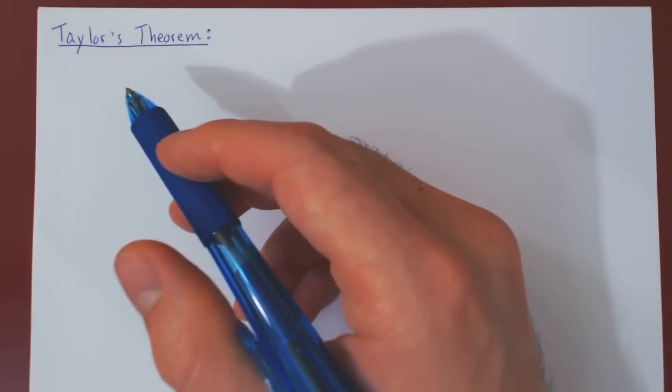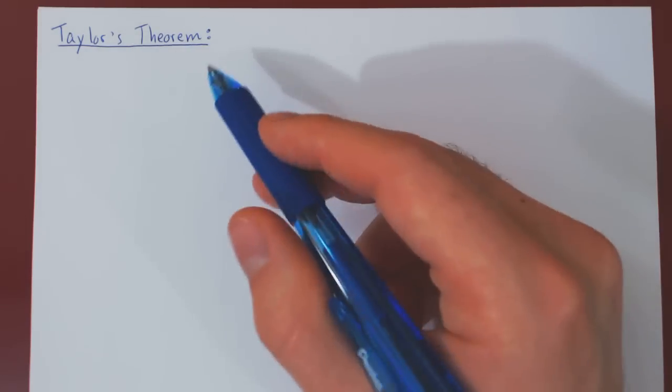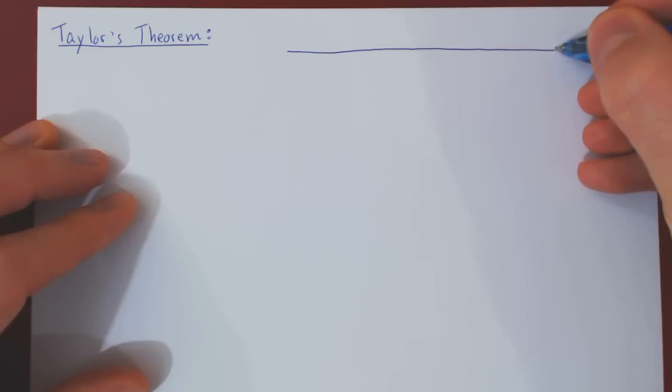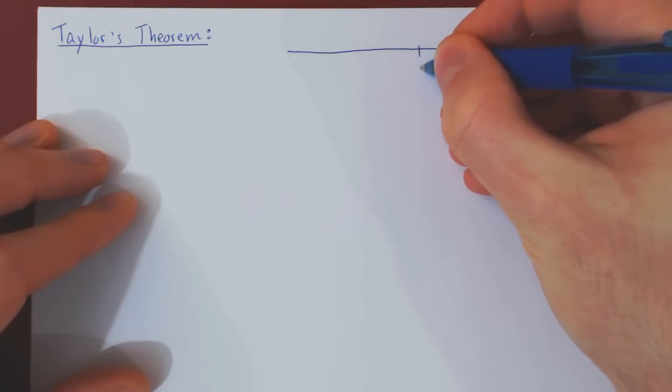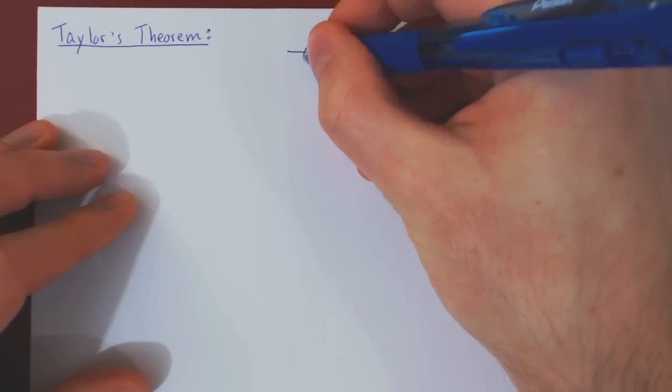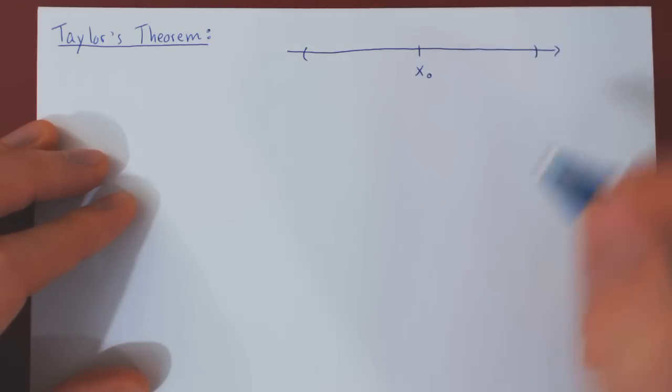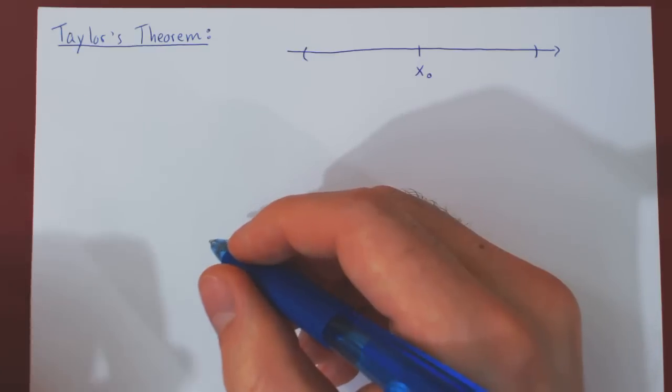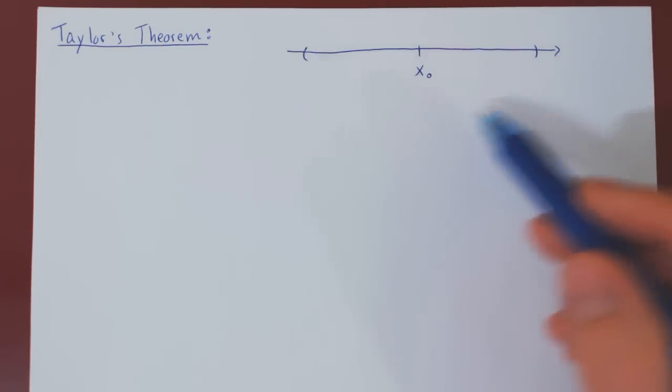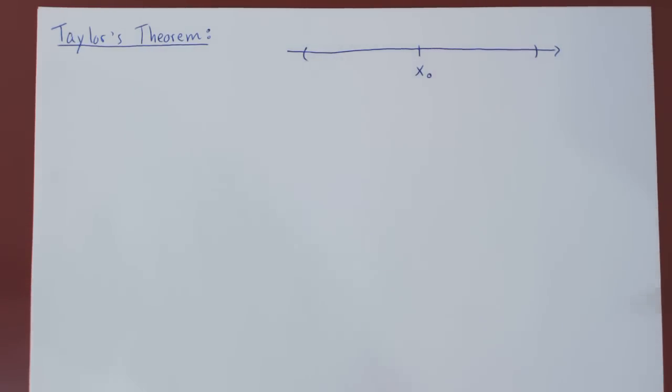In this video, we will take a quick look at Taylor's Theorem. Let's suppose that x0 is the center of our expansion, and that on some interval around x0, f(x) is assumed to be infinitely differentiable, which means that inside this interval around x0, all higher derivatives of the function f(x) do exist.